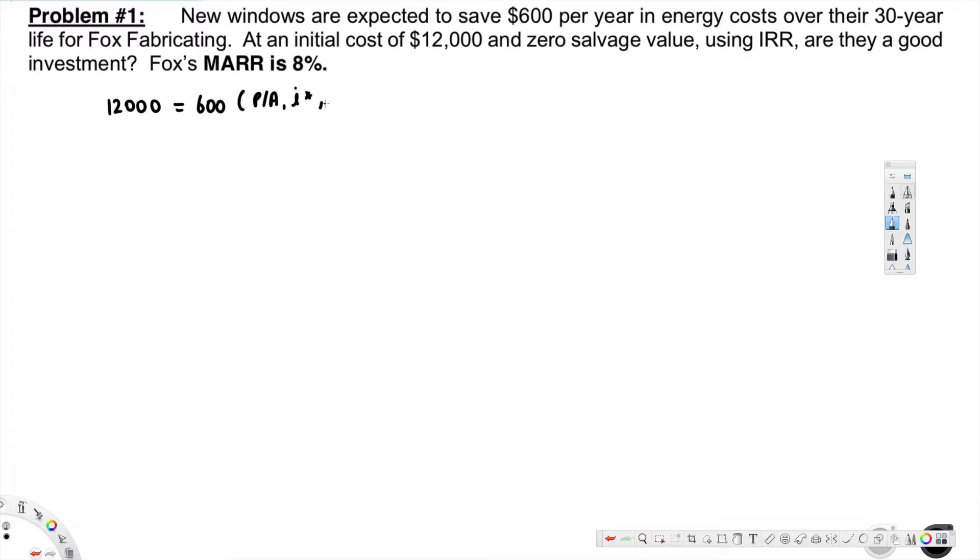And i*, and for 30 years, so we put 30. And this one gives us P/A, i*, 30. And if you divide this $12,000 by 600, you're going to get 20.